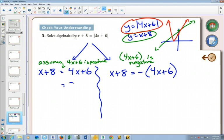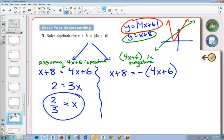I'll get my x's on one side, so I'll subtract x on both sides, subtract 6 on both sides. I'm going to get x equals 2 thirds as one of my answers.